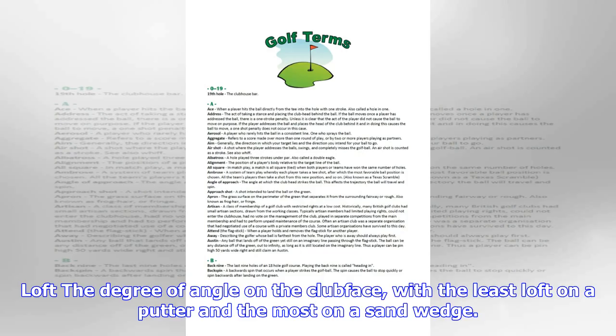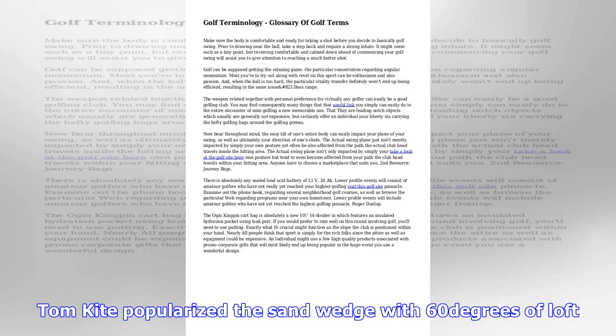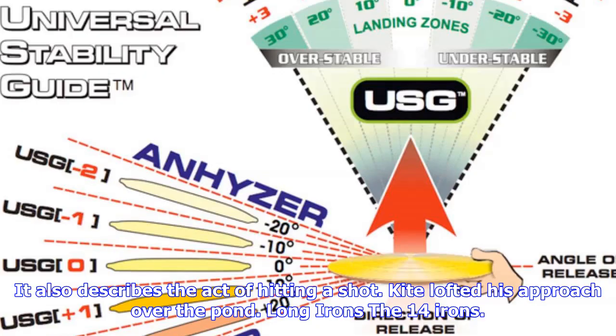Hooding: the act of placing the hands ahead of the ball both at address and impact, which tends to reduce the effective loft of the club. Because he was trying to hit his shot under the tree limbs, Tom Kite hooded a six iron and ran the ball onto the green.